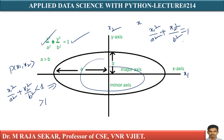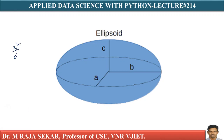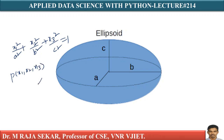We can extend this to 3D, where we call it an ellipsoid — a three-dimensional egg-like structure. The equation of an ellipsoid is x1 squared over a squared plus x2 squared over b squared plus x3 squared over c squared equals 1. Given a point p(x1, x2, x3), if this expression is less than 1, the point is inside the ellipsoid. If it is greater than 1, it is outside the ellipsoid. If it equals 1, it is on the ellipsoid surface.